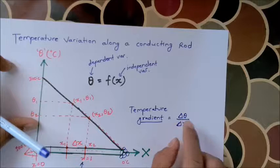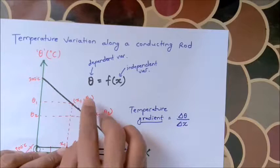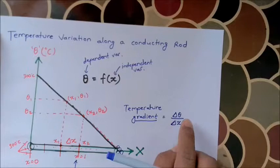Delta theta — the change in temperature from x1 to x2. That manipulation will give us final temperature minus initial temperature, over the distance, or change in distance, which is x2 minus x1.